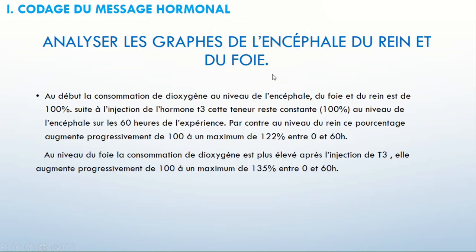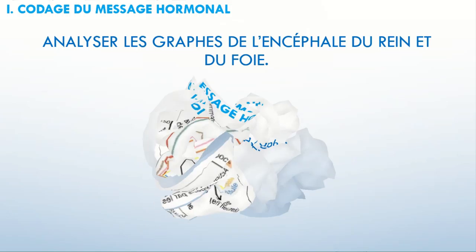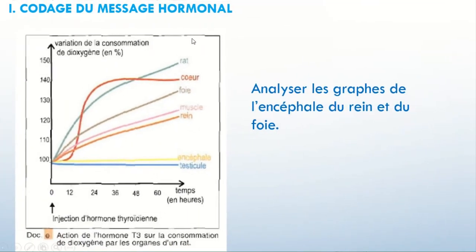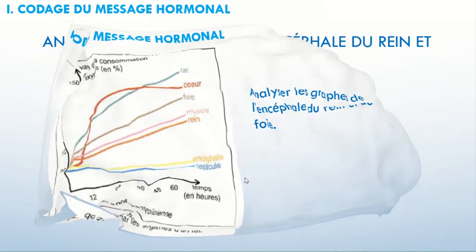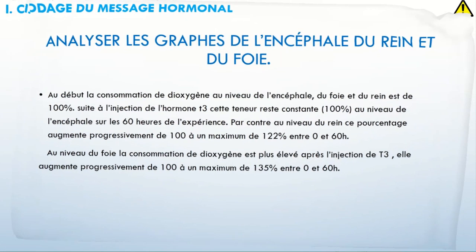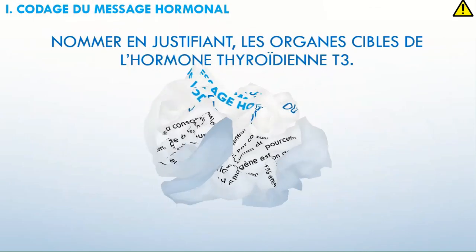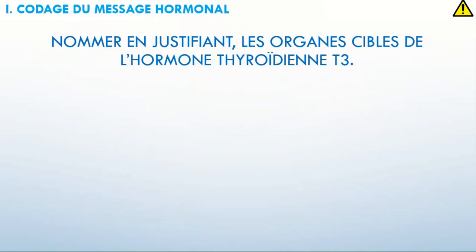Et la conclusion, lorsqu'il me demande analyser puis conclure. Et sûrement, je ne passe pas par tous les graphes, parce que la question est bien précise : analyser les graphes de l'encéphale, du rein et du foie. S'ils ont demandé d'analyser le document seulement, j'aurais dû analyser tous les graphes, c'est-à-dire celui du ras, du cœur, du foie, du muscle, du rein, encéphale et testicule.